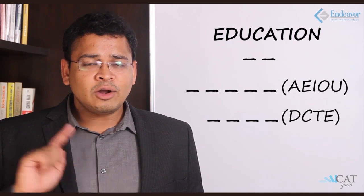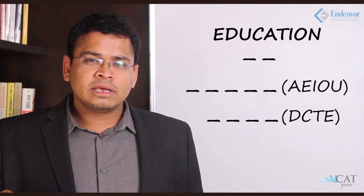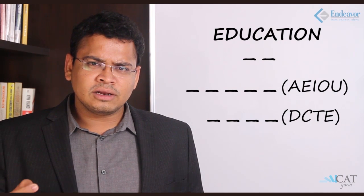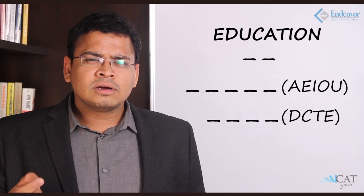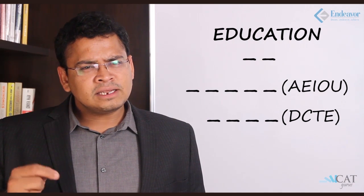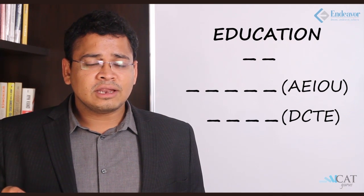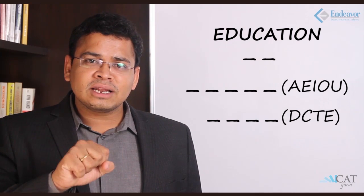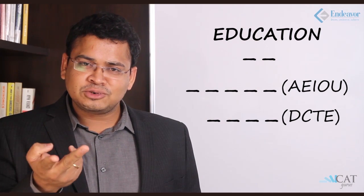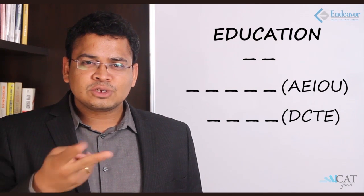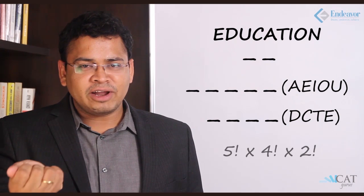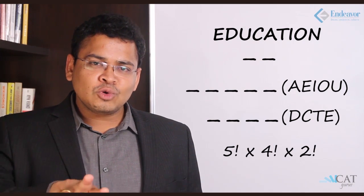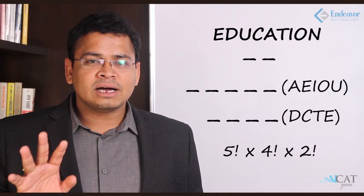Another variation: all vowels are together and all consonants are together. The vowels together give five factorial arrangements and the consonants together give four factorial arrangements. Additionally, these two groups — the vowel block and the consonant block — can themselves be swapped, which adds another factor of two factorial. So the answer is five factorial into four factorial into two factorial.